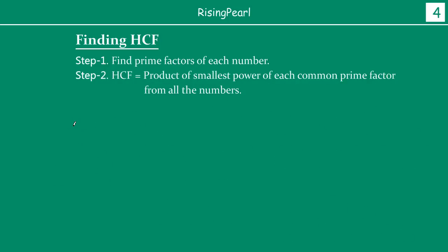Let's take one more example. Say we want to find out the HCF of a slightly bigger set of numbers — let's say 10, 24, and 48. So I have three numbers and I want to find out the highest common factor for 10, 24, and 48. So first step again: find out the prime factors for each of the numbers.